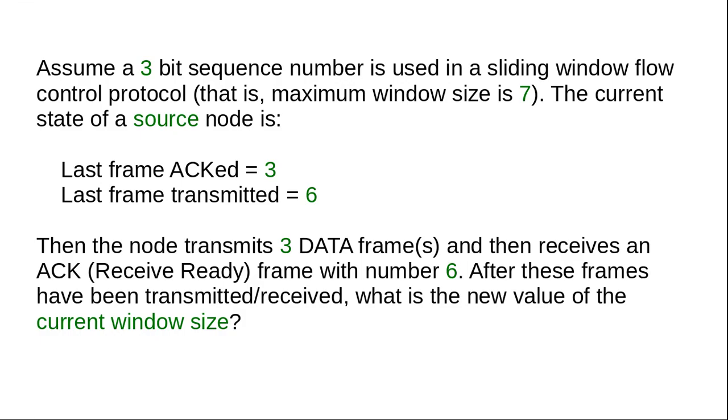Back to the question, something else happens. The source receives an ACK, and the number inside that ACK is 6. What that number means is that the destination has finished processing up until including frame 5, because this ACK number indicates the next number expected. So frames up until including 5 have been effectively acknowledged by their destination.